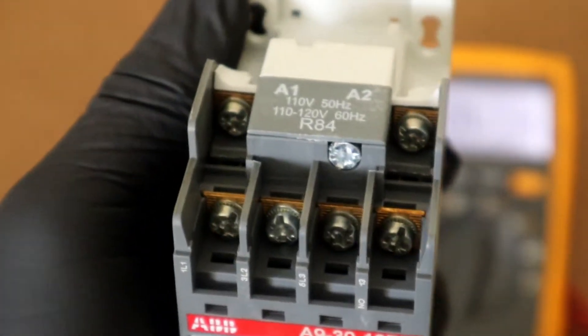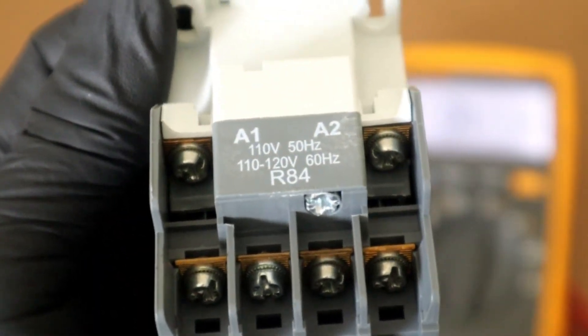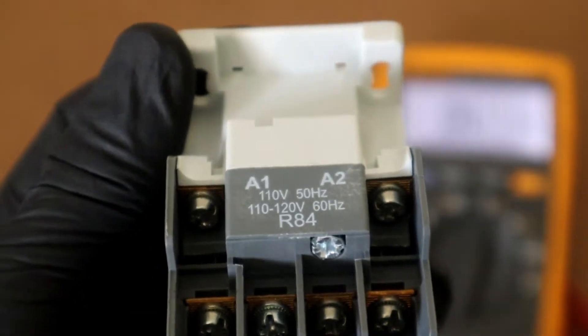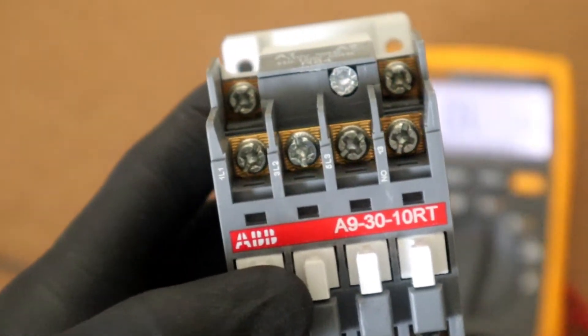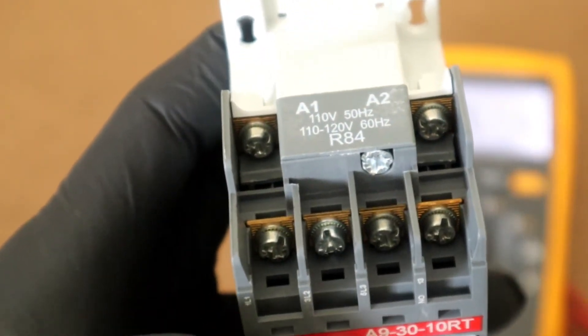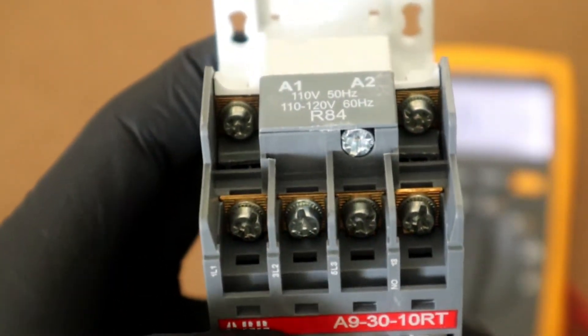Surprisingly, the coil failure is one of the most typical failures when it comes to a 3 pole contactor. If it fails to engage, the coil is normally the culprit.